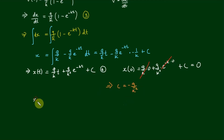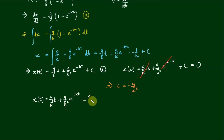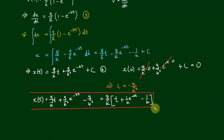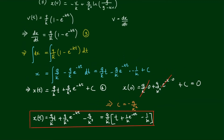So for path 1 of part b we have x(t) equals g/k times t plus g/k-squared times e to the negative kt minus g/k-squared. Factoring out g/k, we get x(t) equals (g/k)(t plus (1/k)e to the negative kt minus 1/k), which matches what we were asked to prove.